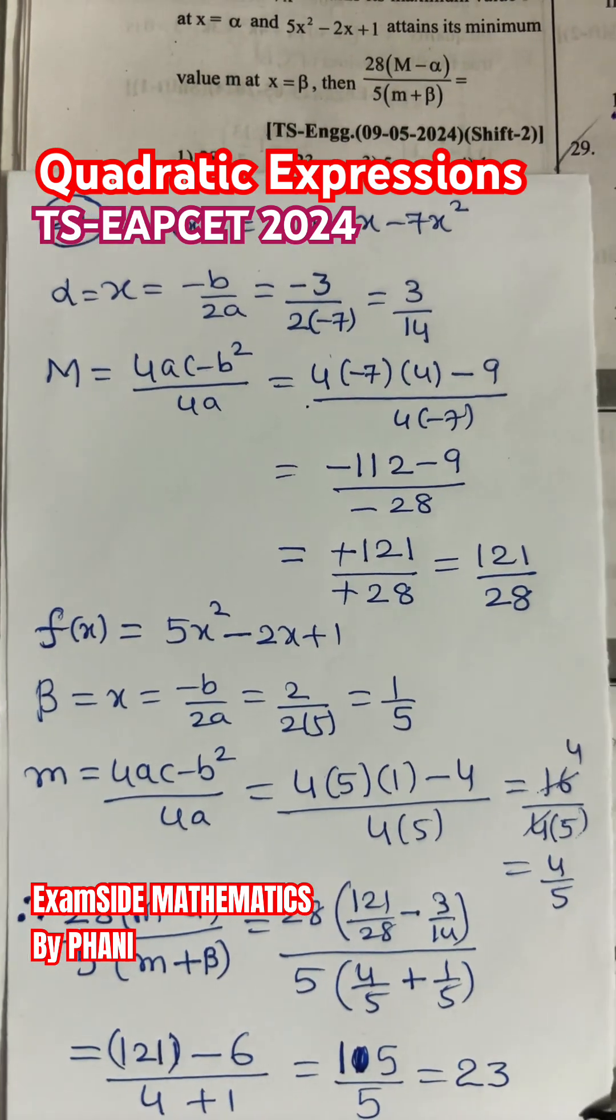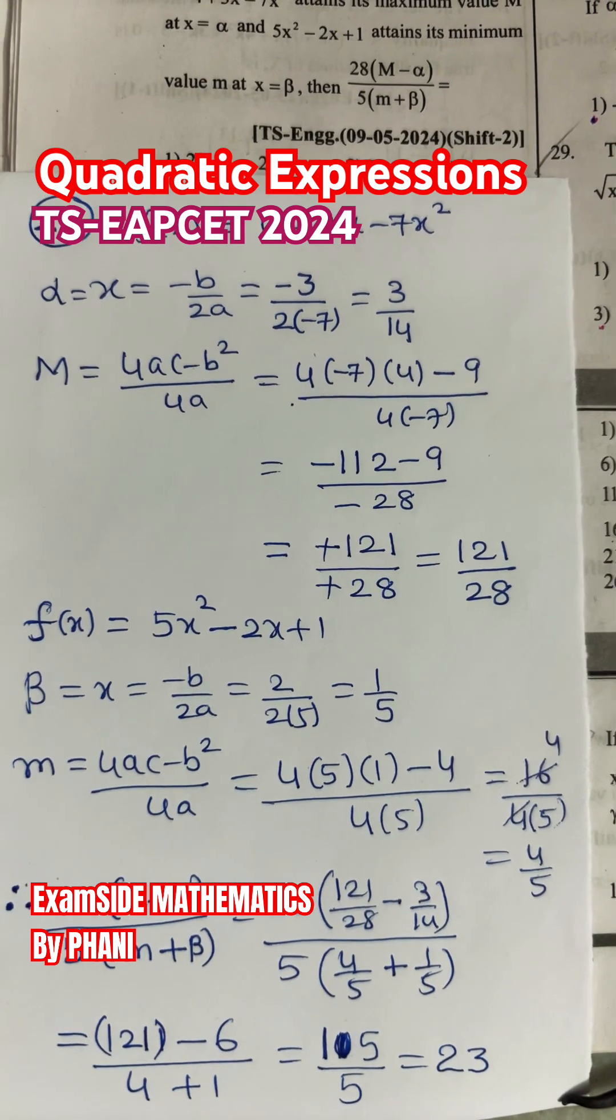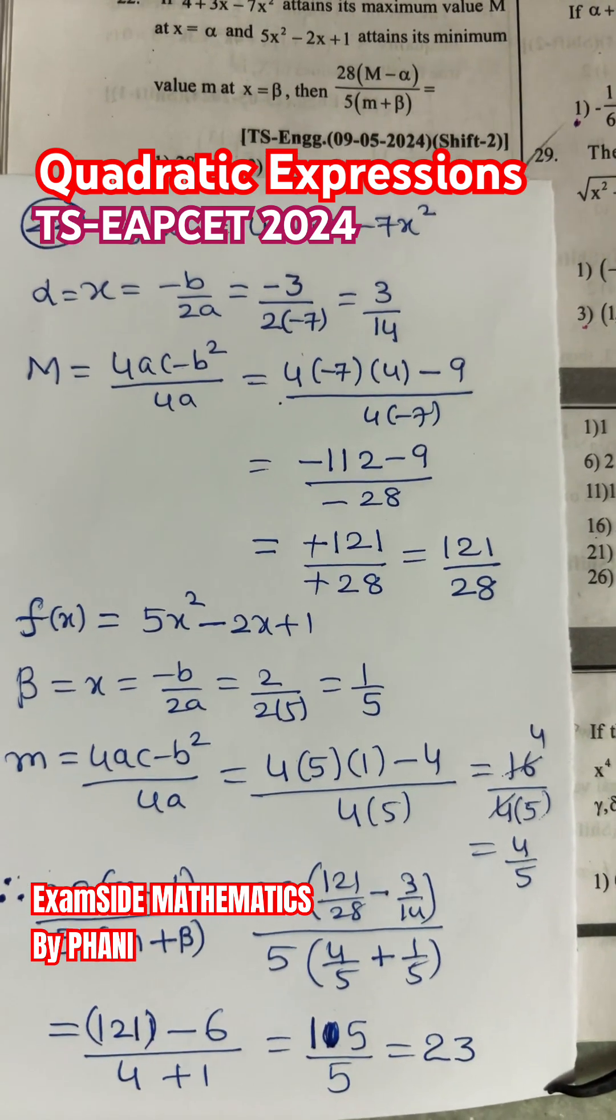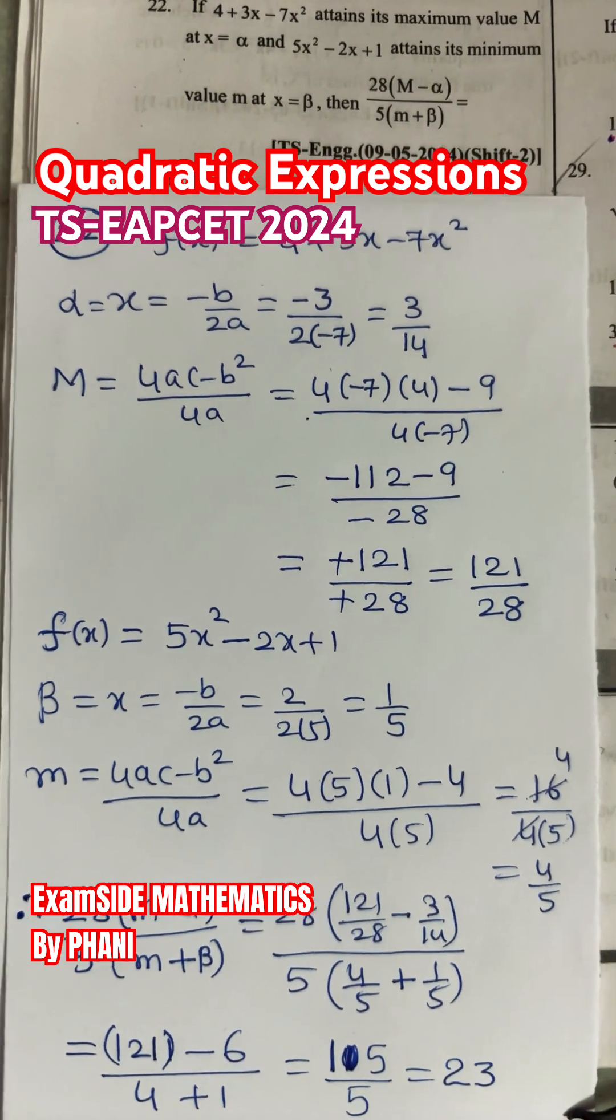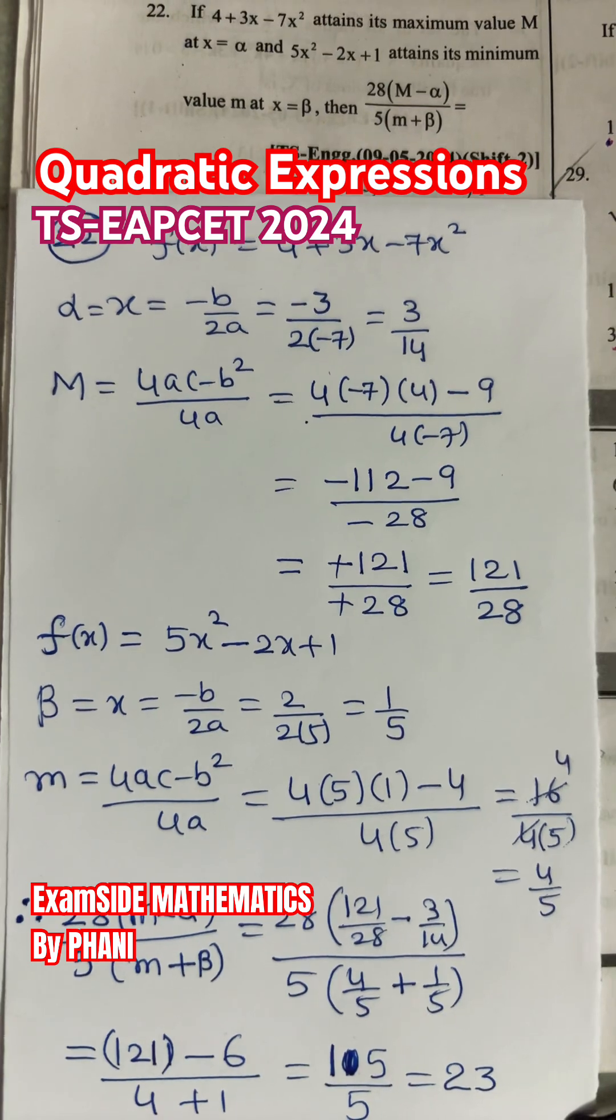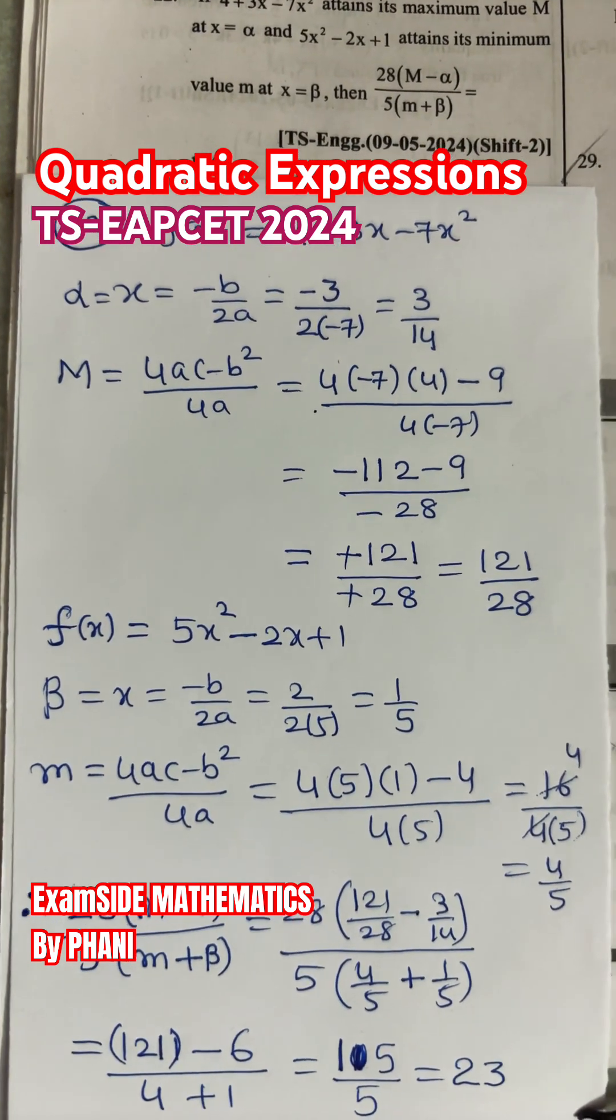These values substitute in this: 28(M - α) / 5(m + β). So if you substitute in this, after simplifying, you are going to get the answer is 23 as shown in that answer.